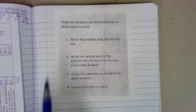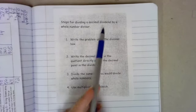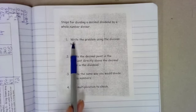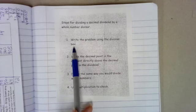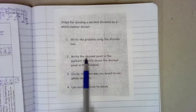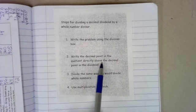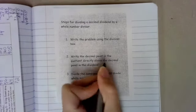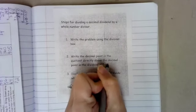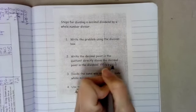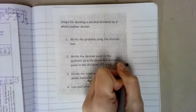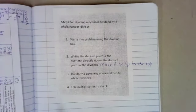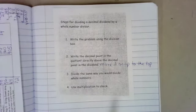So, the steps for dividing decimals, a decimal dividend by a whole number divisor, so that's when your decimal comes first. So it says write the problem using the division box, that's what we've been doing. Write the decimal point in the quotient directly above the decimal point in the dividend. So, Ms. Bridges sings a little song here and we say, move it on up to the top, move it on up to the top.